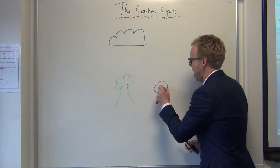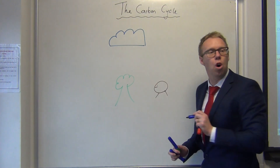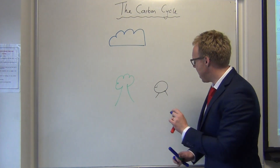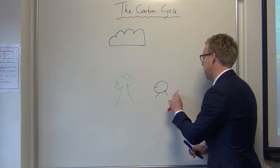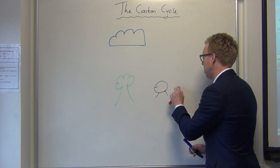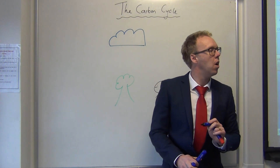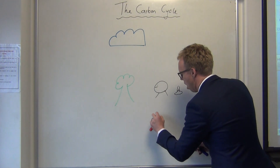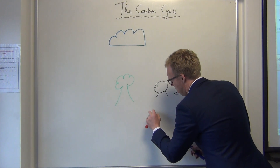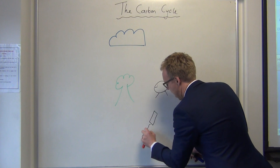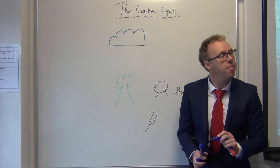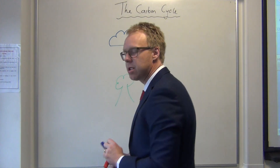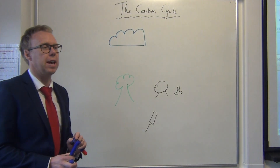This is a cow or other herbivore type. Then I'm just going to draw a little bit of cow poo, and then I'm going to draw a lovely bacteria. And that is the beginnings of our carbon cycle.